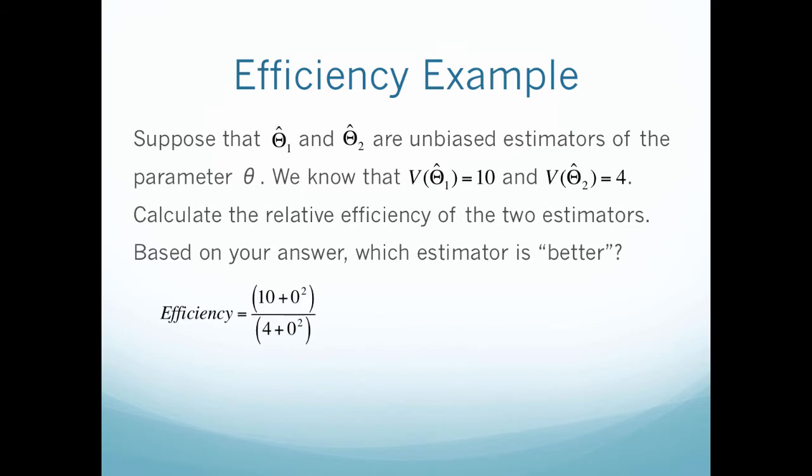Let's first calculate my efficiency. My efficiency is just ten, so the variance of the first, divided by the variance of the second. Notice here we just have a zero because these are both unbiased, so there's no bias to incorporate. That then simplifies to be five over two. Here the relative efficiency is greater than one, so we would take the value in the denominator or we would take the smaller variance.